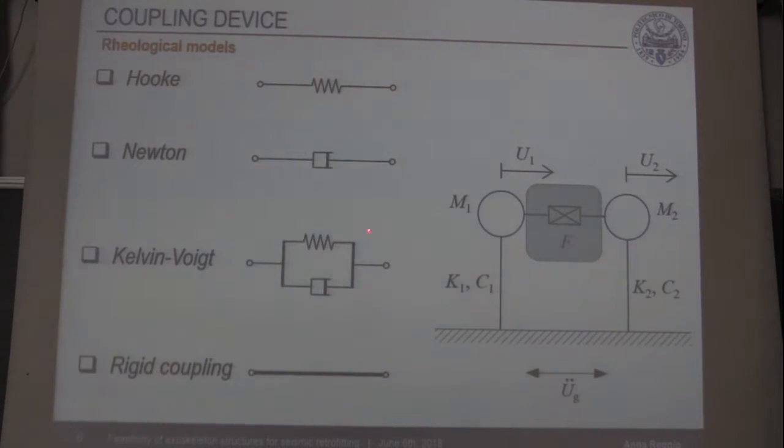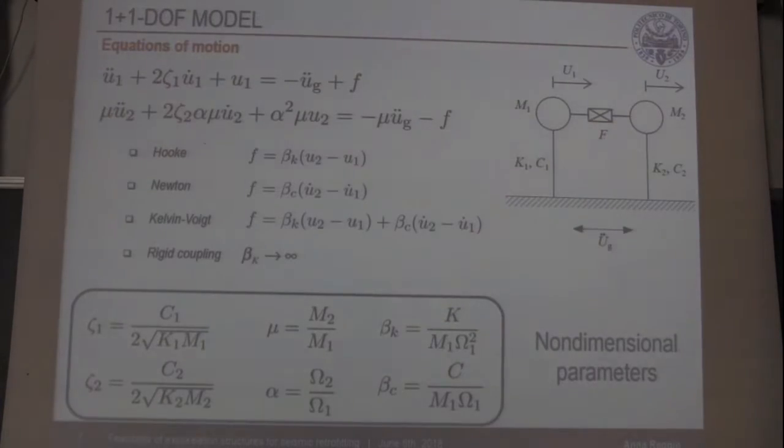We consider a viscoelastic behavior modeled according to Kelvin-Voigt and the limit case of a rigid coupling. The two degree of freedom model has mainly a paradigmatic value in the sense that it allows to catch in a straightforward way the essential features of the dynamic behavior of the system and, above all, it allows to identify the governing independent parameters.